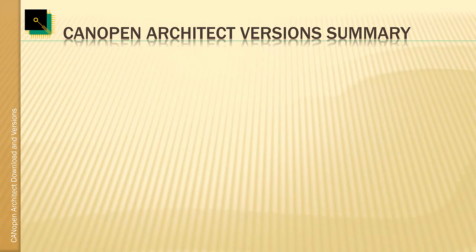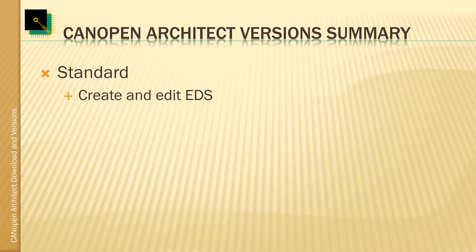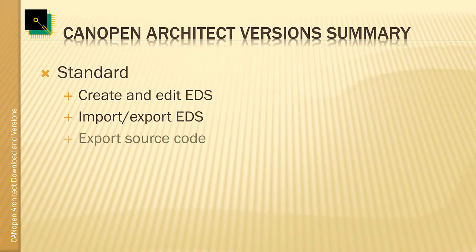Here is a summary of the main differences between the two available versions. The standard version contains all of the core functionality you'd expect in an EDS and object dictionary editor. It can create new EDSs and edit existing EDSs. Third-party EDSs can be imported and completed EDSs can be exported for sharing with others. The standard version can also export source code for our Canopen Slave stack.